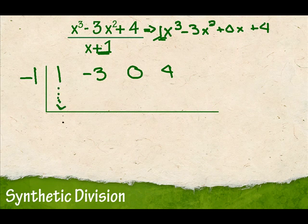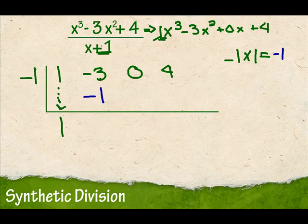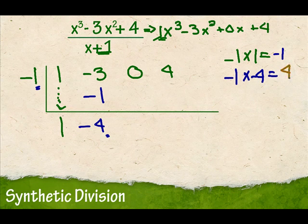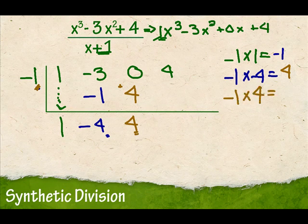Just like before, we're going to bring this number straight down — it still comes straight down. Then we're going to multiply: negative 1 times 1. Negative 1 times 1 is negative 1. Now that number goes right here. I'm going to add down: negative 3 plus negative 1 is negative 4. Then I'm going to multiply again: negative 1 times negative 4 is 4 — remember, a negative times a negative is a positive. So that number will go here. And remember, I'm adding down: 0 plus 4 is 4. Then I'm going to multiply again: negative 1 times 4 is negative 4 — remember, a negative times a positive is a negative. So negative 4 goes here, and when I add down, I get 0.